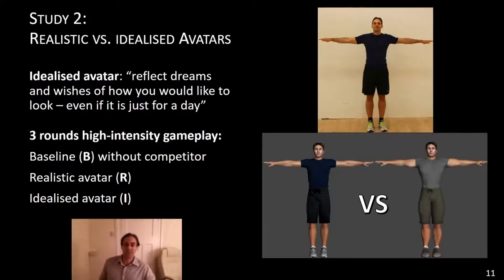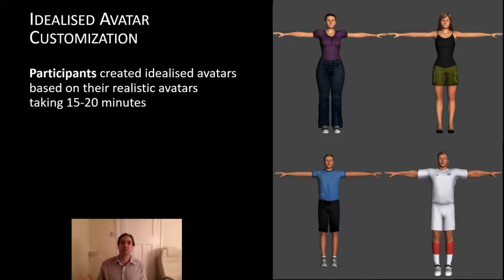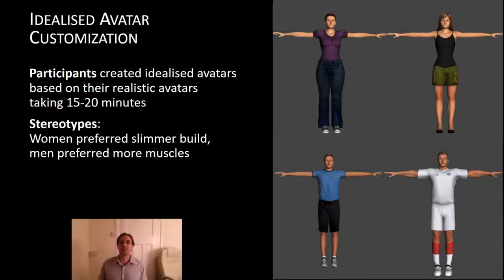Again, we let people play the game three times, once as a baseline and then with a realistic avatar and with their idealized avatar. The way we customize these idealized avatars is letting participants do the customizations themselves based on their realistic avatars using the same software. It took participants about 15 to 20 minutes to do that. On the right side you see some examples of realistic and idealized avatars. As you can see, most people followed stereotypes. Generally, women preferred a slimmer build and men preferred more muscles. Most people said that they liked the avatars and enjoyed the experience.